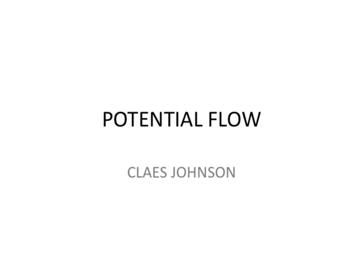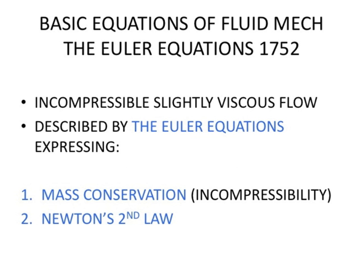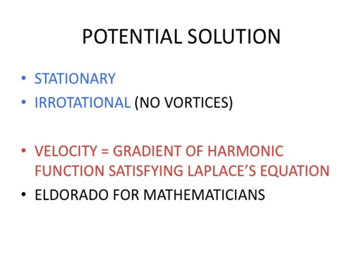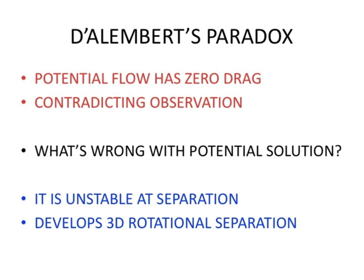Potential flow has a fundamental role in fluid mechanics as stationary, irrotational solutions of the Euler equations, describing incompressible, slightly viscous flow, including hydromechanics and subsonic aerodynamics. A potential flow velocity is given as the gradient of a potential satisfying Laplace's equation with a Neumann boundary condition, modeling the small skin friction of slightly viscous flow.